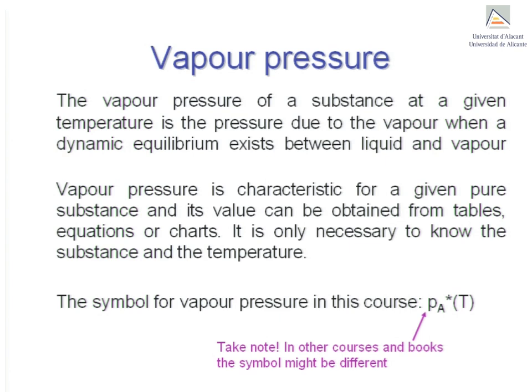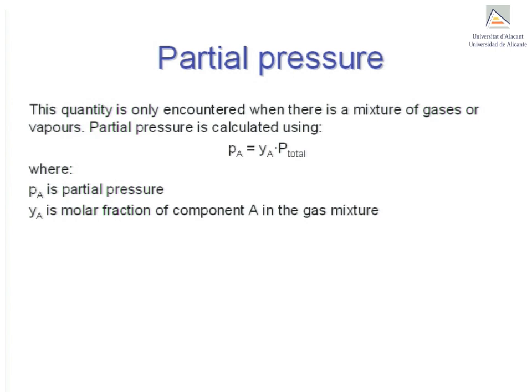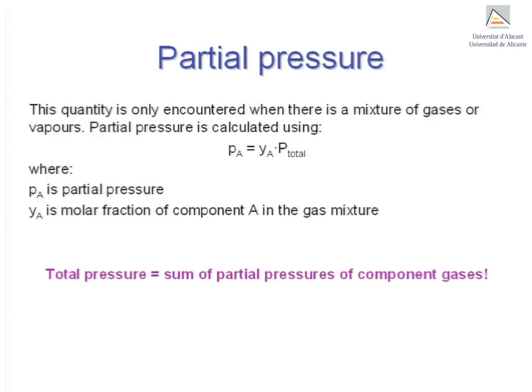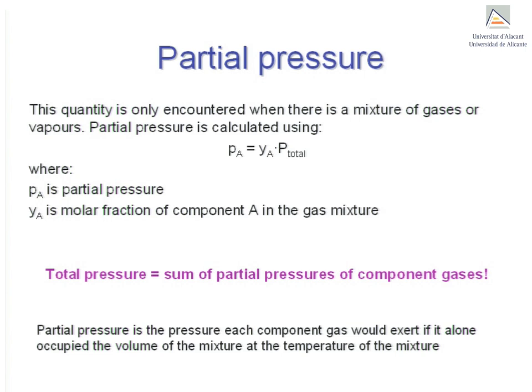Lastly, we look at what partial pressure means. We only come across this type of pressure when dealing with a mixture of gases or vapors. Partial pressure is calculated using the equation shown, with P sub A denoting the partial pressure and Y sub A denoting the molar fraction of component A in the gaseous mixture. From this definition, we can deduce that the total pressure equals the sum of the partial pressures of the component gases in the mixture. More technically, partial pressure is the pressure each component gas would exert if it alone occupied the volume of the mixture at the temperature of the mixture.